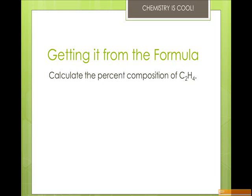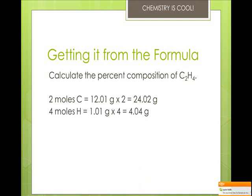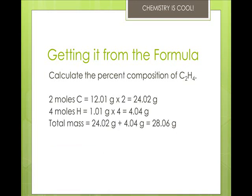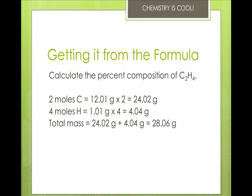Then you know the pieces in the whole. So this has two moles of carbon, which gives us 24.02 grams, four moles of hydrogen at 4.04 grams. Our total mass is 28.06. So then all we've got to do is divide by the total.